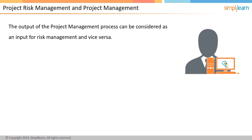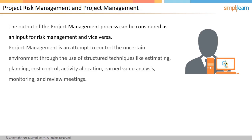As you already know, all projects have uncertainty. Project management can be seen as an attempt to control this uncertain environment through the use of structured techniques like estimating, planning, cost control, activity allocation, earned value analysis, monitoring, and review meetings. Project risk management provides an approach by which uncertainty can be understood, assessed, and managed within projects. So, effective project management is a critical success factor for project success.